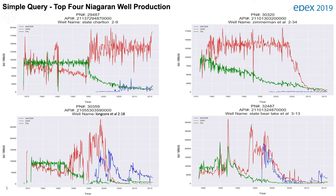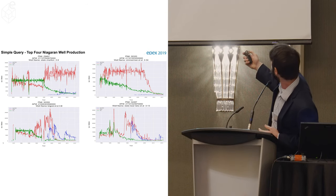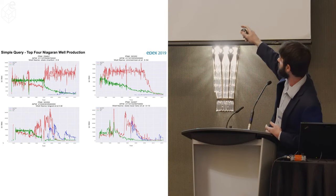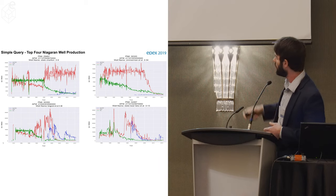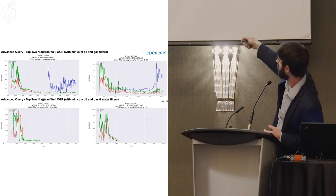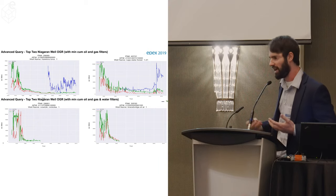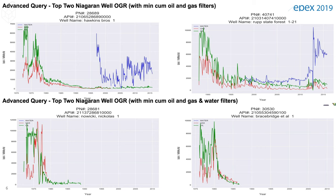Here's another query filter we did. We quickly calculated all oil and gas ratios for these Niagara wells and plotted them up. We saw that these first two wells look like they got water flooded later on. We can easily run that same query but also put a minimum water filter — so we want to see wells that had high oil gas ratios that haven't been water flooded — and now these two wells here could become potential targets for a water flooding activity.